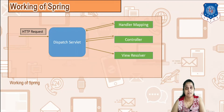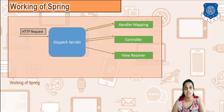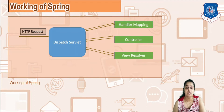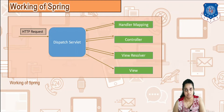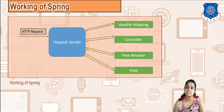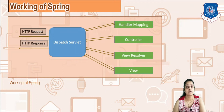The view resolver is a place where a proper view is created. It resolves the name of the view that you want to redirect and display on the page. When the view resolver gives the proper name of where the view can be resolved, a view is created, and this view is then given back to the client by the dispatcher servlet in the form of a response. This is the basic working of Spring.